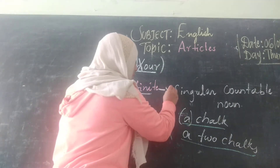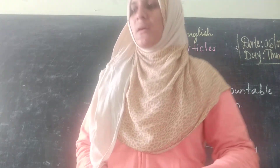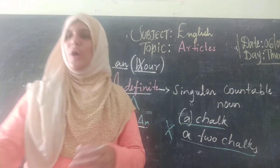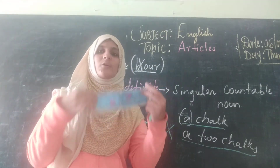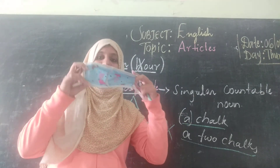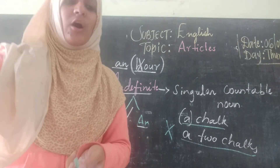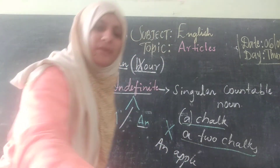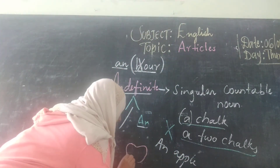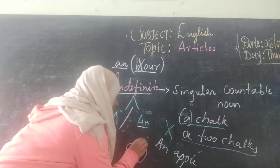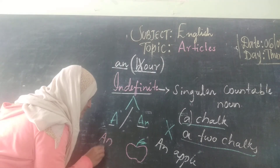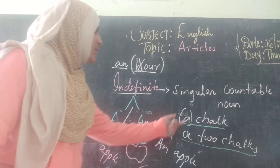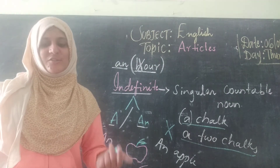This indefinite article is basically used for singular countable nouns. For example, 'this is a box' — it is one in quantity, a singular noun. Or 'this is a mask' — I can't say 'these are two masks' with 'a'; it is only one, hence 'a mask.' Or 'an apple' — this is an apple because it is one in quantity. So: a chalk, a mask, a body, a chair, a towel.